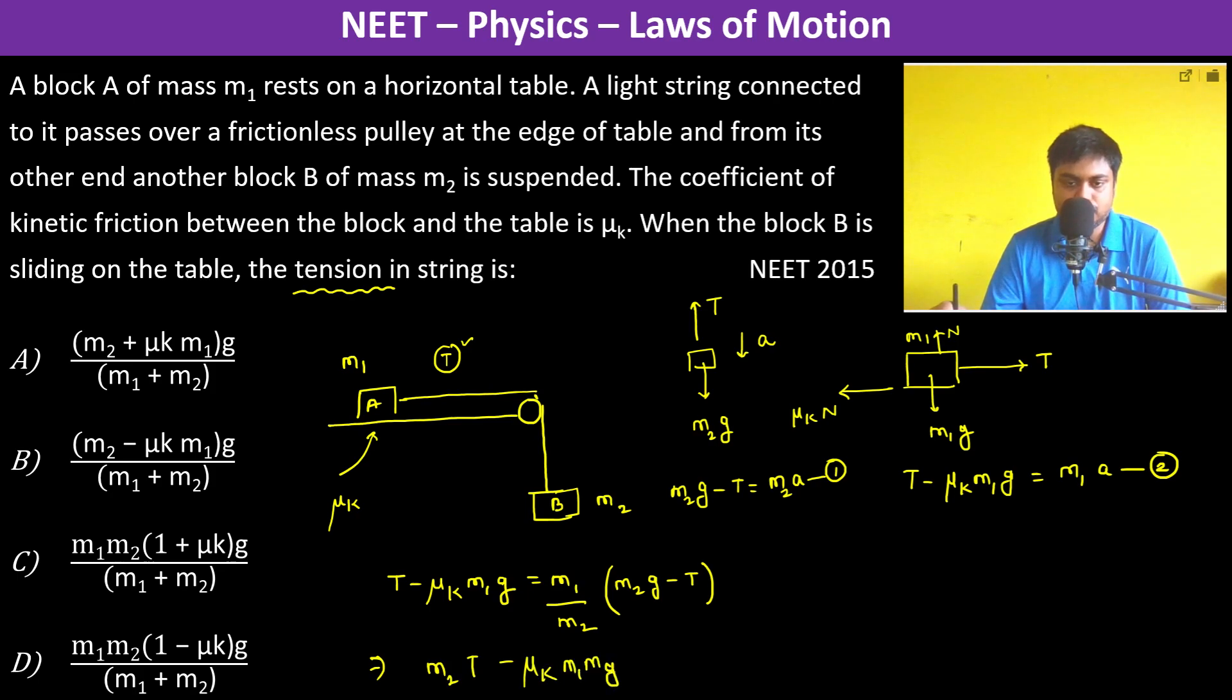So therefore T is going to be M1 M2 (1 + μk) g divided by (M1 + M2).